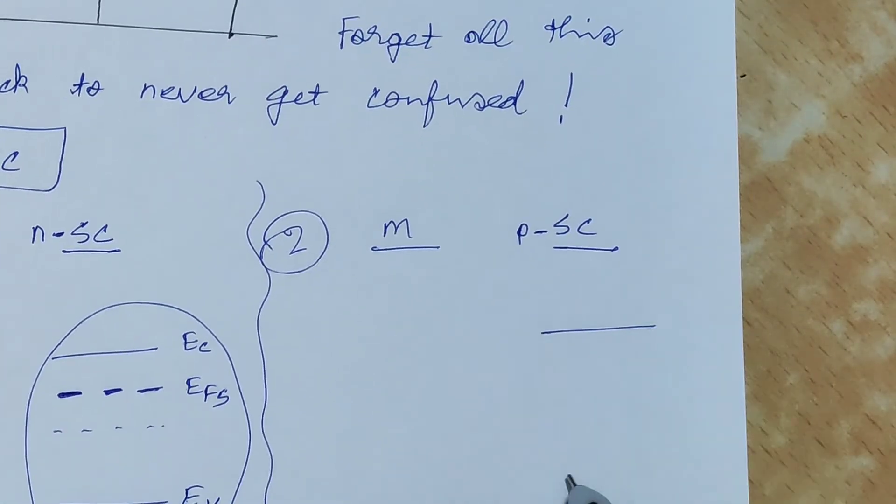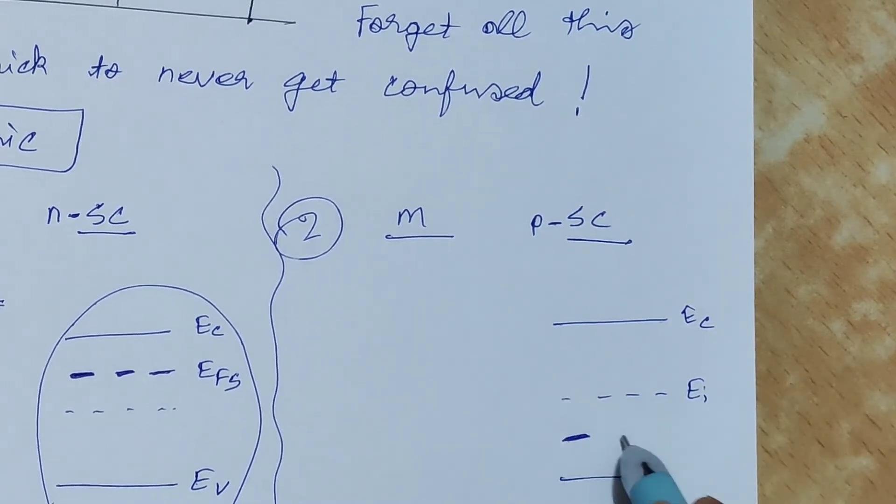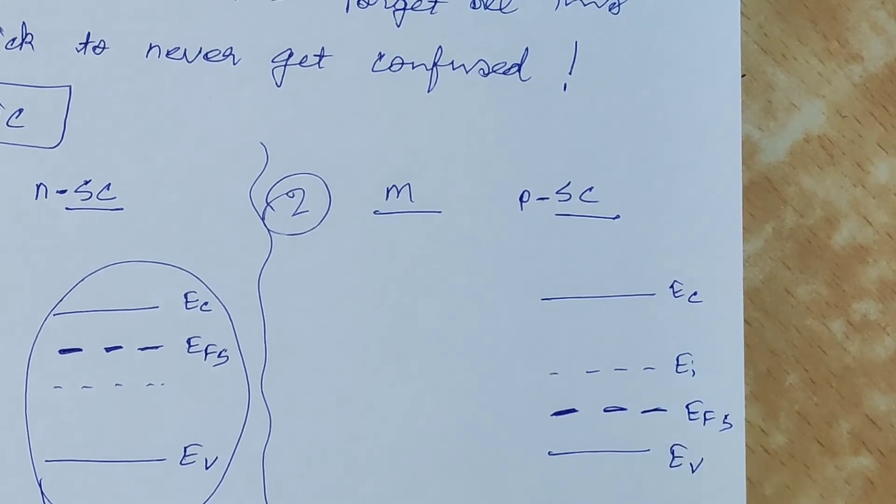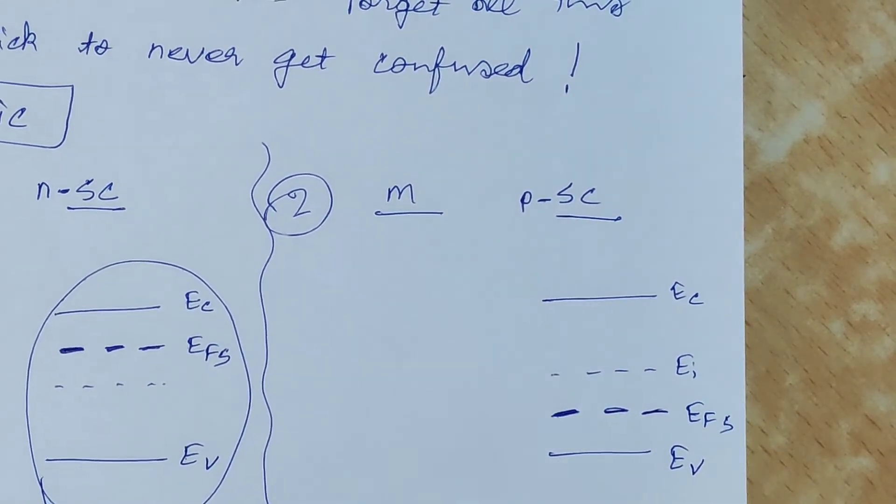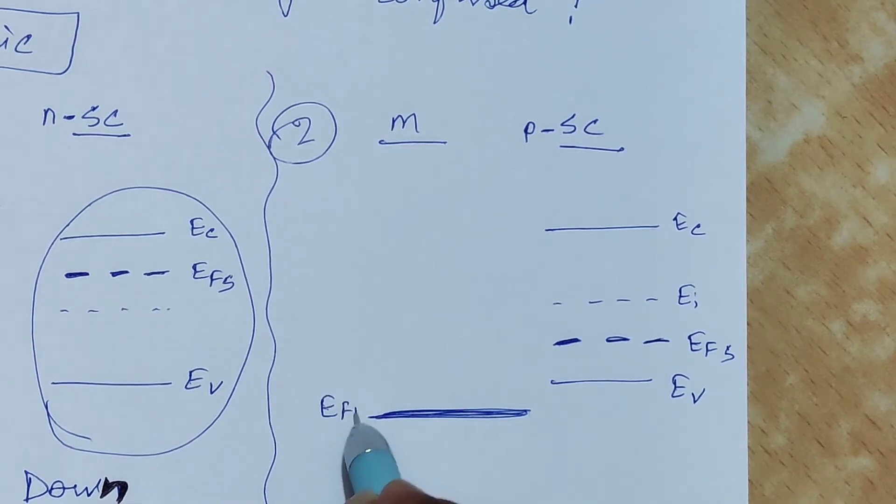Similarly, going on the same lines, we have this p-type semiconductor. Here too we have EC as the conduction band edge, EV is the valence band edge, EFS is the Fermi level for the semiconductor of p-type.